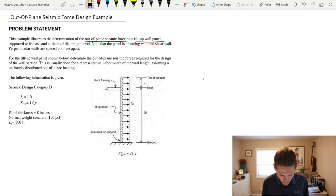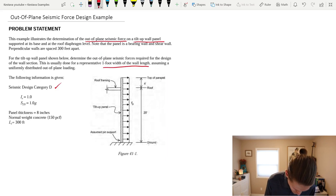For the tilt-up wall panel shown below, determine that out-of-plane seismic force is required for the design of the wall section. This is usually done for a repetitive 1 foot width of the wall length, assuming a uniformly distributed out-of-plane loading. So, we're going to be finding all things today per 1 foot width segments, all right? So, keep track of that when we're doing units. And then we're given some seismic criteria. So, seismic design category D. So, pretty demanding seismic region. You have an importance factor of just 1.0. So, not an essential facility or some type of custom special facility. It's just a regular importance factor 1.0.